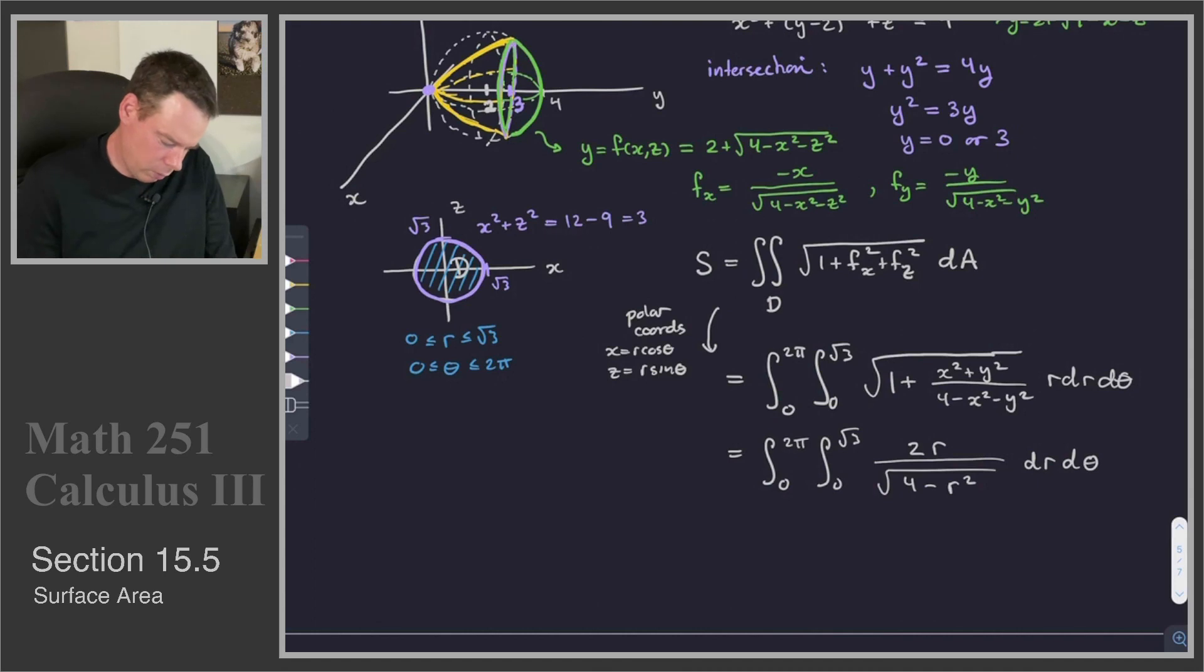And so now we can work out the integral. The theta can be done on its own, because there's no theta present in the limits of integration for r or the integrand, so that's 2 pi times the integral with respect to r. The anti-derivative would be 4 minus r squared, square rooted, with a negative 2 out front, and that's going from 0 to root 3.